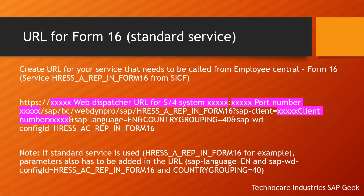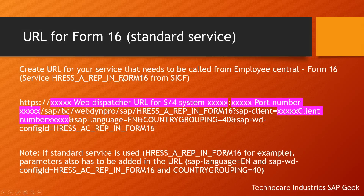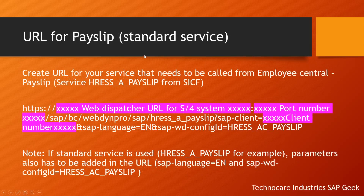Moving on to the Form 16 service — the URL format is exactly the same, but the service used is different. The service for Payslip is HRESSA_PAYSLIP, and for Form 16 it is HRESSAREP. The rest of the details are exactly the same as we followed for Payslip. Form 16 is also a standard application, so you will have to include the parameter pattern in the URL. Form 16 has three parameters: SAP Language, SAP WD Config ID, and Country Grouping, whereas Payslip had only two parameters.